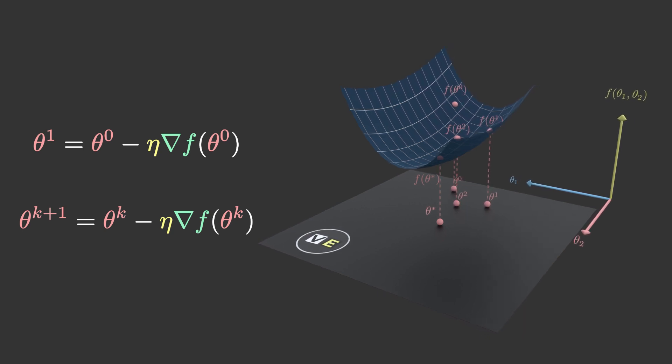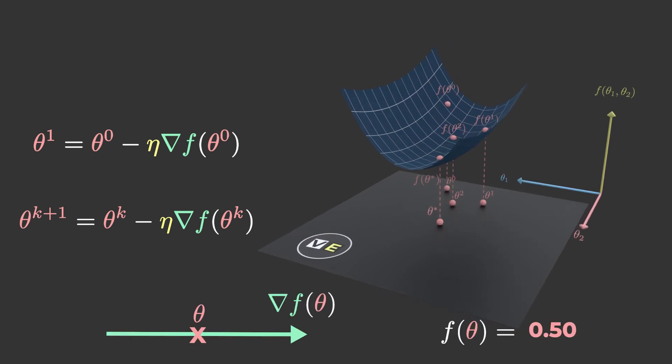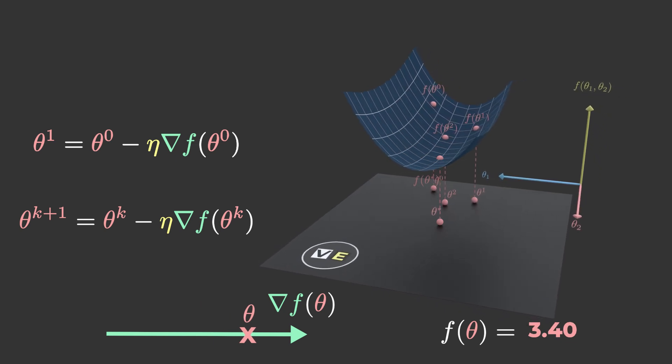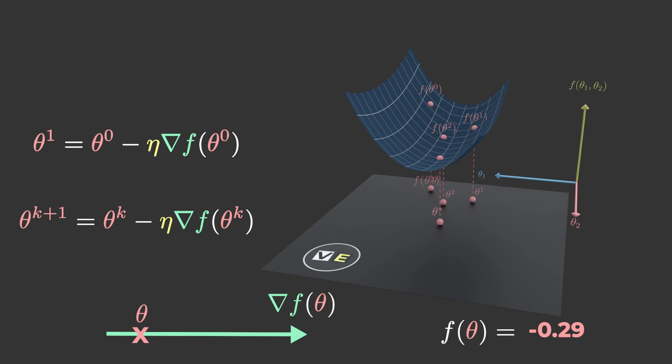The intuition behind every step is that the gradient of a function gives you the direction that increases that function the most. So by taking a small step in the opposite direction, you can hope to make the function decrease at each iteration.